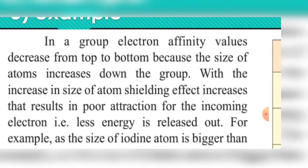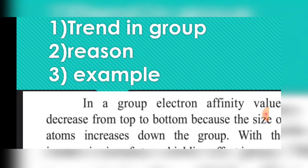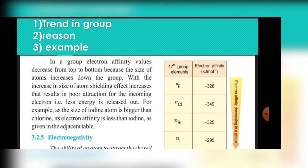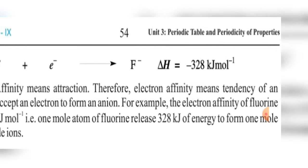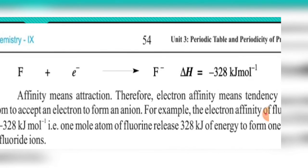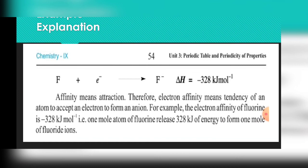In this long question we studied about electron affinity — adding an electron to the outer shell — and because energy is released, we represent it with a minus sign. A negative change in energy means energy is being released. When we add an electron to a neutral atom, the number of electrons increases beyond the number of protons, so the atom gains a negative charge. These are also called electronegative elements, which gain electrons and convert into negative ions.